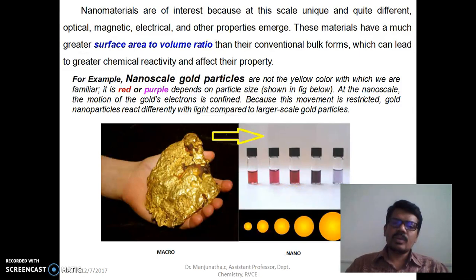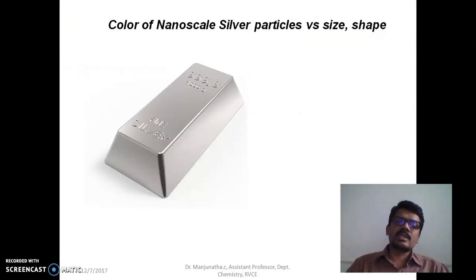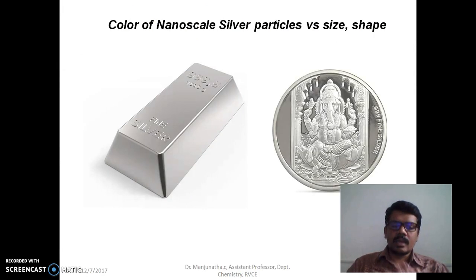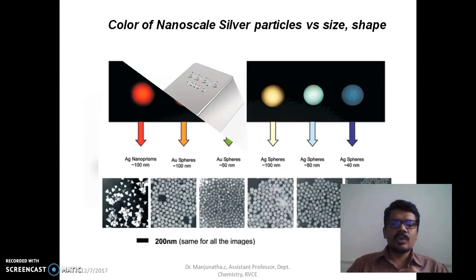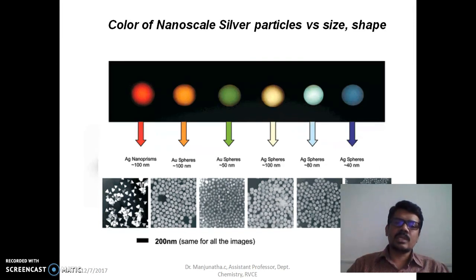That is the beauty of nano. Another example is the silver. We know that this is the color of the silver, and you will see if you go to the nano size silver, or if you prepare nano size silvers, you can see even different shapes give different colors. These are the nano prisms, silver nano prisms, nanospheres of gold.